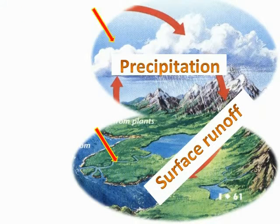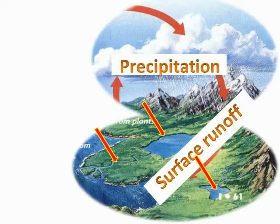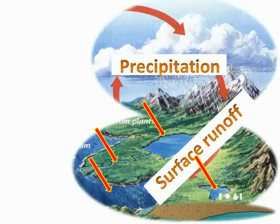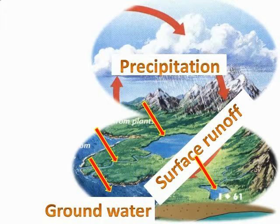The water gathers in streams and runs into ponds, lakes, and eventually into the sea. This is called runoff. Some water also seeps into the ground — this water is called groundwater. Groundwater may eventually be returned to the surface by springs.